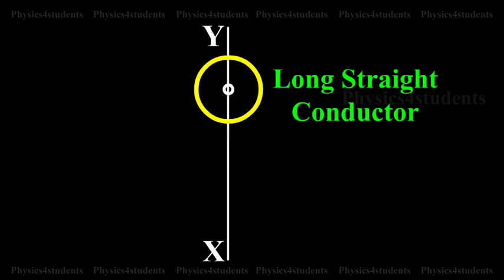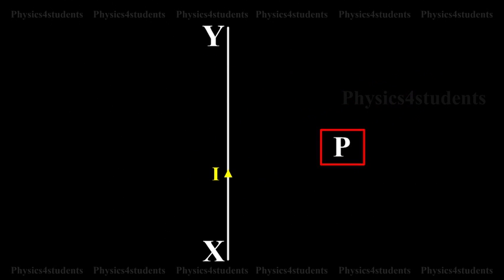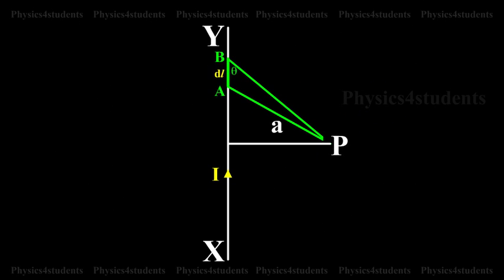XY is an infinitely long straight conductor carrying current I. P is a point at distance A from the conductor. AB is a small element of length dL. Theta is the angle between the current element I dL and the line joining the element dL and point P.